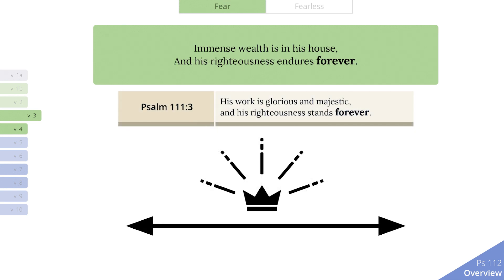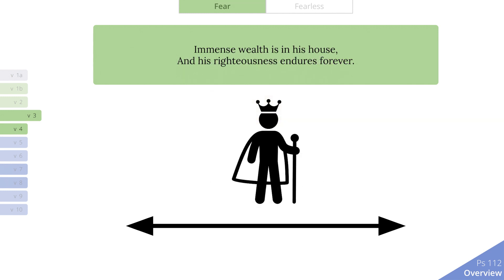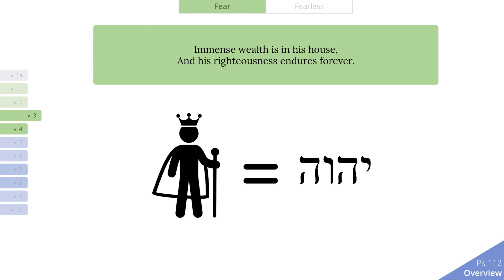In Psalm 111, the word 'forever' was crucial to understanding the significance of this same line, which occurs in both psalms. The Lord's past deeds were indeed glorious and majestic, but His righteousness — His pattern of behavior in accordance with the requirements of divine law — is not restricted to these past acts. His righteousness stands forever. When the righteousness of this man is also declared to stand forever, we begin to see the fuller picture. This man who fears the Lord, delighting in His commands, is becoming just like the Lord.